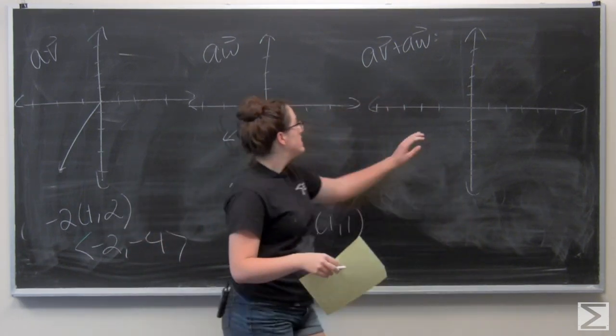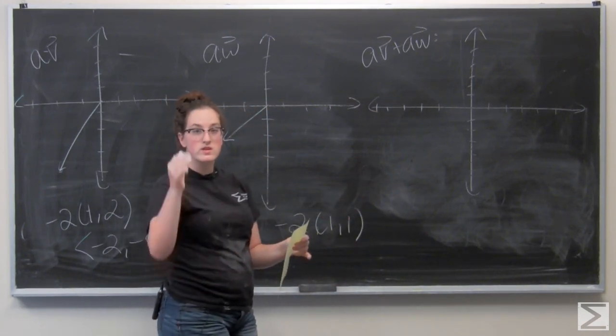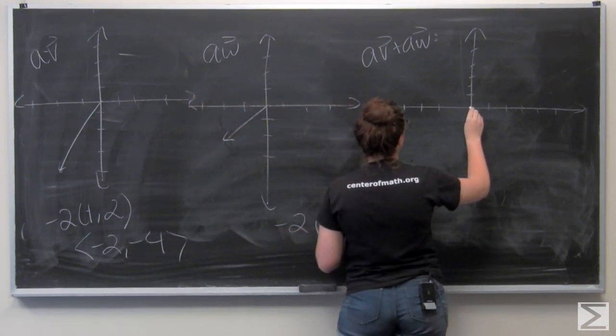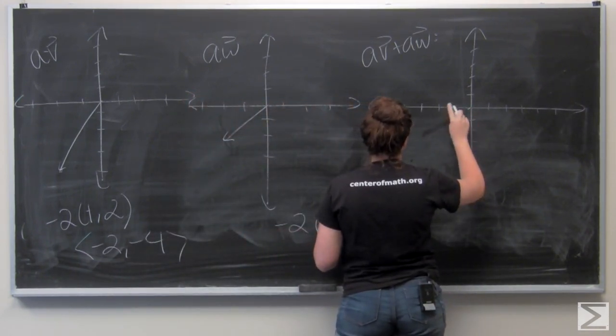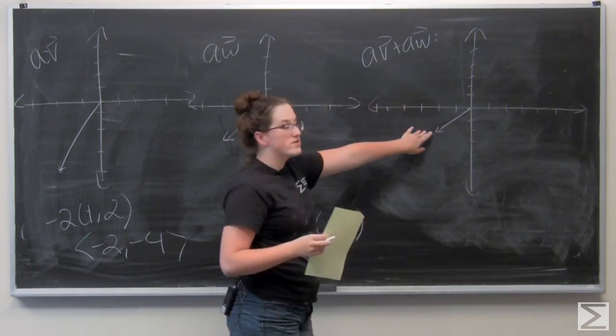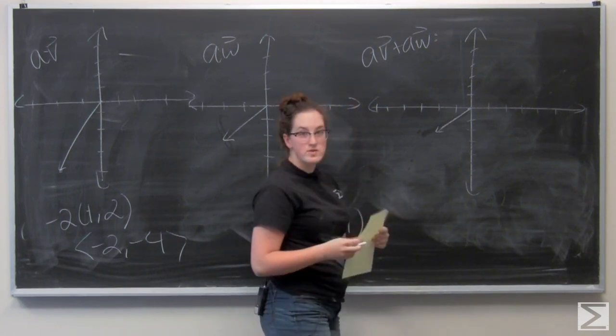And then I have av plus aw, and I'm going to do it the same way as before. Draw the vectors end to end. So first I have aw, the vector (-2, -2). Then I'm going to add on the vector (-2, -4). So over 2 more units,